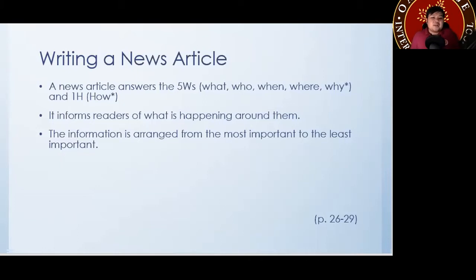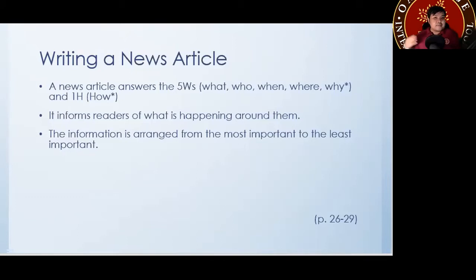A news article informs the reader of what's happening around them — that's what news articles are for. The information in news articles is arranged from the most important to the least important.